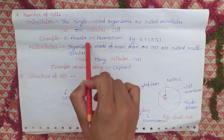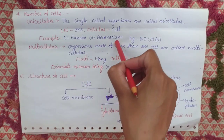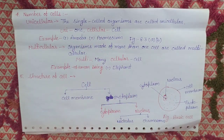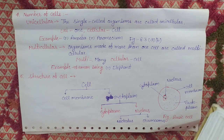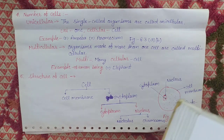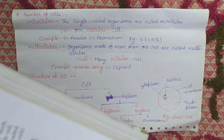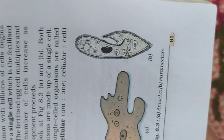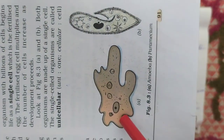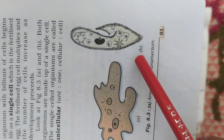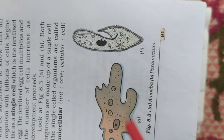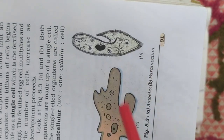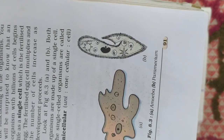The examples of unicellular organisms are amoeba and paramecium. Amoeba is a unicellular organism; paramecium is also a unicellular organism. You may see their figures from your book, figure 8.3 — that is amoeba and this one is paramecium. You have to make both figures below the unicellular topic.